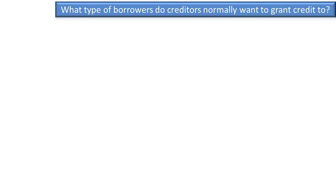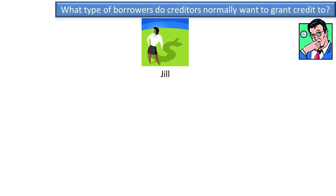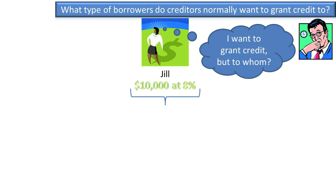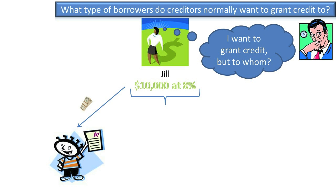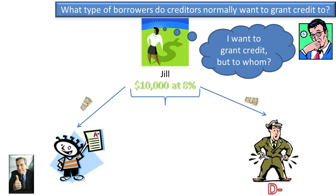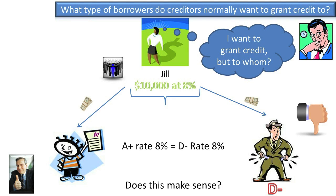What type of borrowers do creditors normally want to grant credit to? From a creditor's perspective, creditors want to lend to entities that will pay them back with interest. For example, assume you are Jill and ready to lend $10,000 at an 8% interest rate. Your options are to lend to an A-plus quality borrower who will very likely repay the loan in full plus interest as promised, or a D-minus borrower who very likely may not repay the loan. Given the two choices, you would choose to lend to the A-plus quality borrower. Absolutely, that is the right choice.